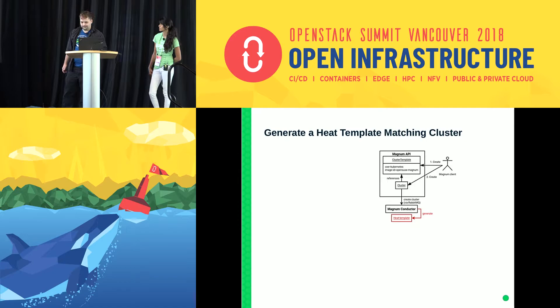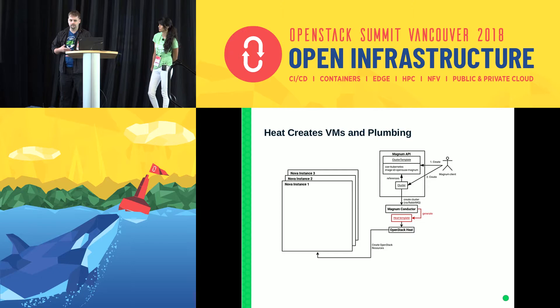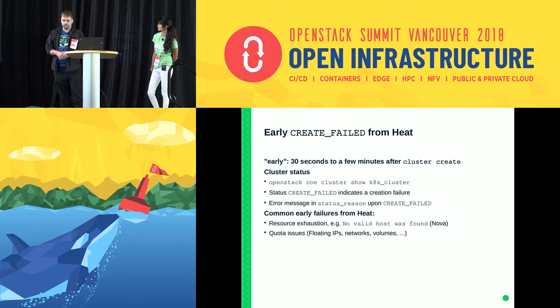With that out of the way, Magnum conductor generates a Heat template describing the cluster and sends it to OpenStack Heat, which creates Nova instances and all the plumbing to interconnect them — Neutron networks, floating IPs, the works. At that point, we no longer get error messages from the Magnum API. We need to poll the Magnum API to check our cluster status, and we're interested in two fields: status and status reason.